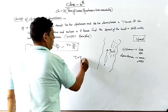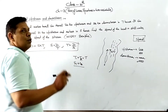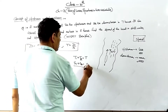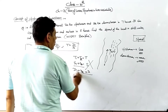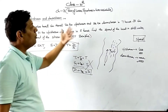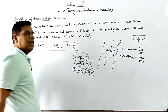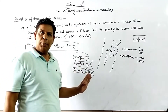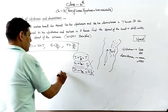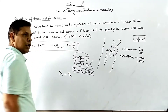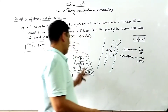Total distance: lekin yahan pe humein nahi bataya, distances alag alag hain, toh T1 plus T2 is equal to total time. In few of the cases, we can use speed and distance concepts together. If we can do with a single formula, then we can use these two concepts.